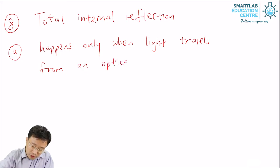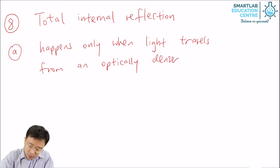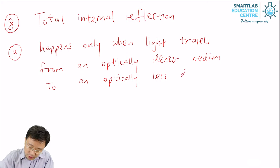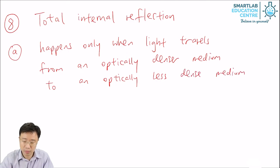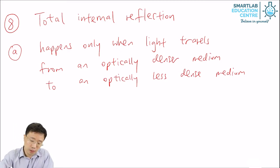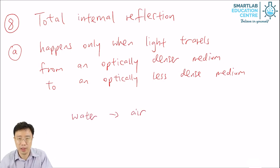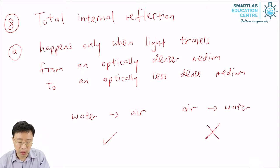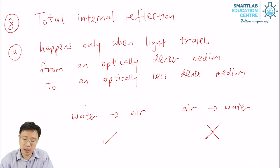It only happens when light travels from an optically denser medium to an optically less dense medium. For example, when light travels from water to air, it can happen. But when light travels from air to water, it cannot happen. Because water is optically denser and air is optically less dense — from optically denser to less dense medium it can happen, but the other way around it cannot.